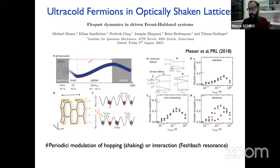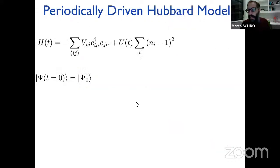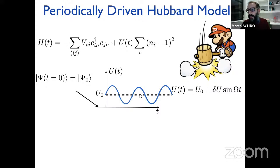Driven Fermi-Hubbard systems are also routinely realized with ultracold atoms in optical lattices, by shaking the lattice to modulate either the hopping or the magnetic field via Feshbach resonance to control the interaction between atoms. With these few slides, I hope you are convinced it can be interesting to understand what happens when you prepare a fermionic system in some initial state and then evolve it with an interaction that is modulating in time. We will discuss how the physics of this problem changes depending on the drive frequency omega and the modulation amplitude delta U.